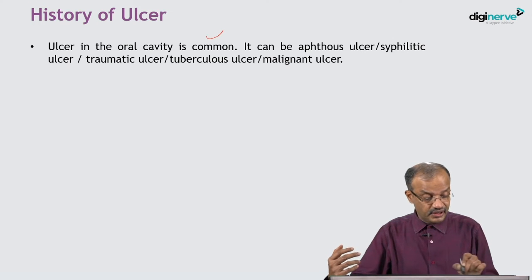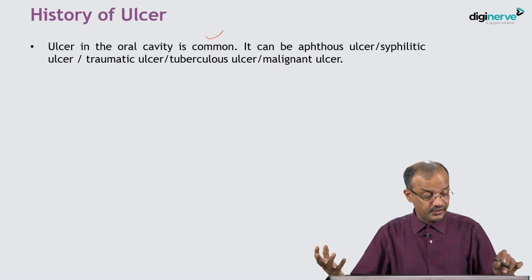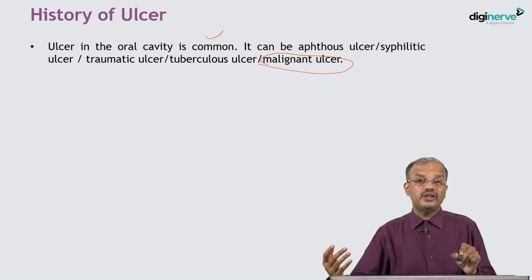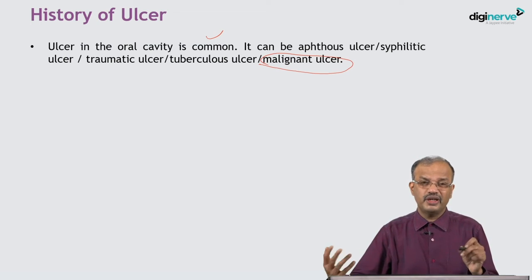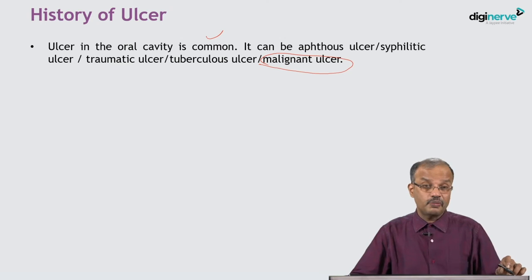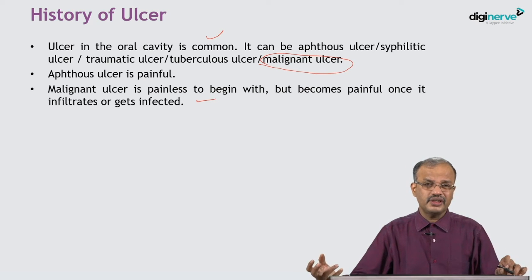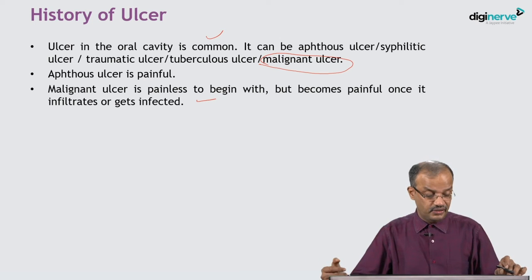The ulcer in the oral cavity can be an aphthous ulcer, syphilitic ulcer, traumatic ulcer, tuberculous ulcer, or malignant ulcer. We are most concerned about the malignant ulcer, as all others can be treated conservatively or may resolve on their own. Tuberculous ulcer requires drug therapy and heals with a proper course. Malignant ulcer needs a special protocol for proper outcome. Aphthous ulcers are painful, while malignant ulcers are painless to begin with but become painful once they infiltrate or get infected.